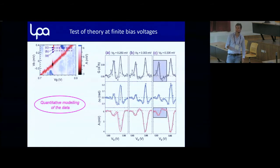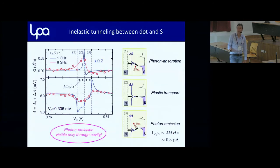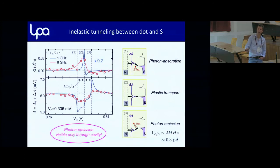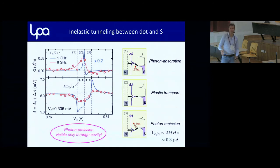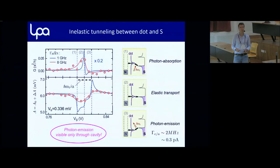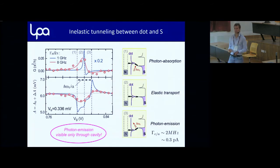In particular we understand the amplification: if you're sitting at one bias position you have transitions between the superconducting peak in the density of states and the dot that absorb photons; at another position you have transitions that emit photons — and these emitted photons show up through the cavity response. So we can extend this reasoning to understand out-of-equilibrium electronic transport processes and how they show up in the microwave cavity response.